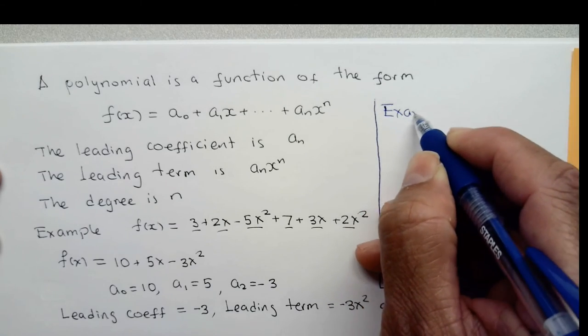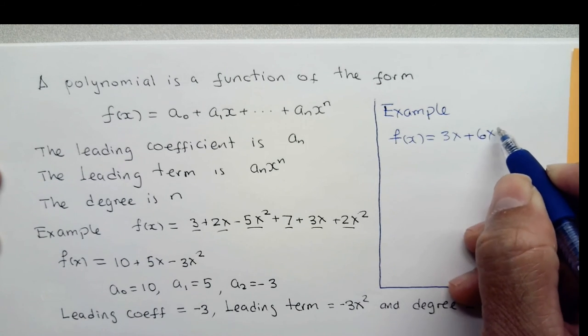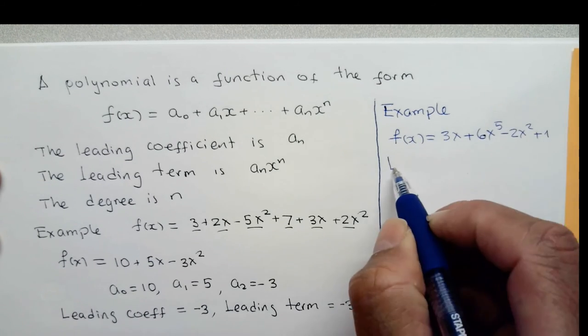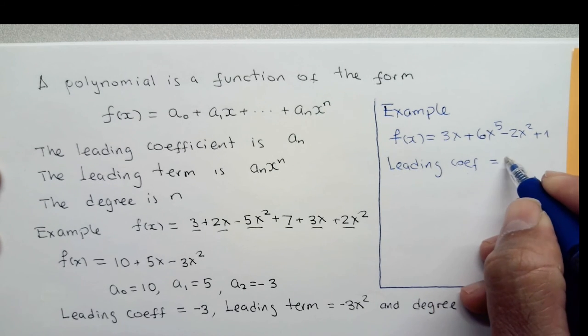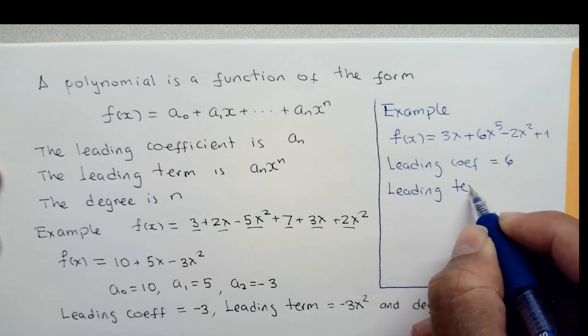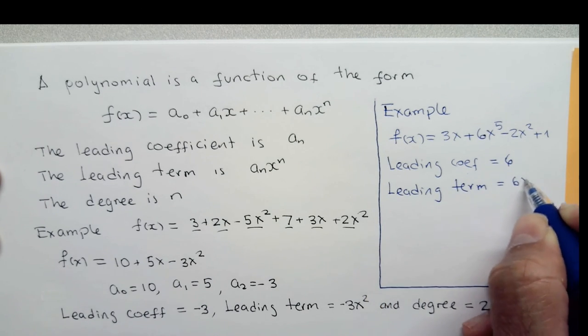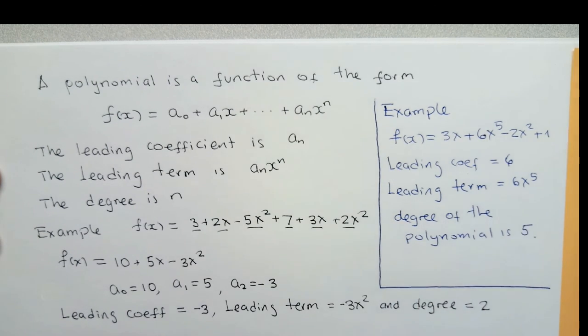This is another example. In this case, the leading coefficient is 6. The leading term is 6x to the power of 5, and the degree of the polynomial is 5. Here we go. Thank you.